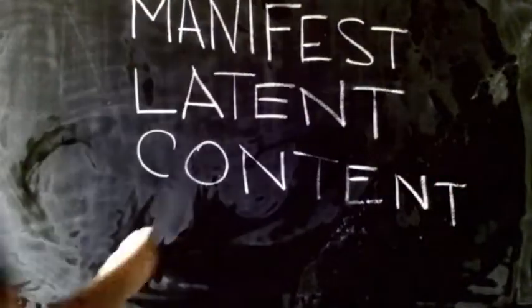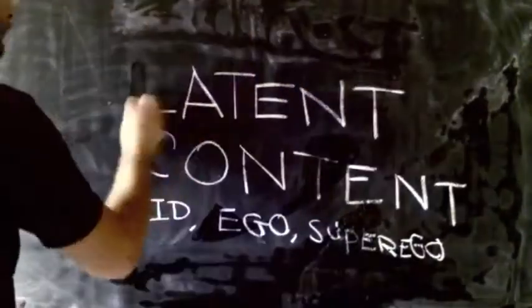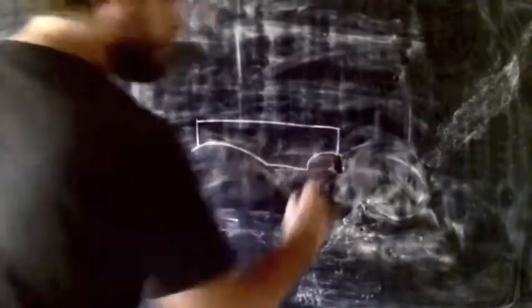Manifest content refers to the little images and experiences we have and see in a dream. Latent content refers to hidden meanings, drives, and desires embedded in those images and experiences. The surrealists, too, wanted to tap into the subconscious as a repository of subject matter for their art and as a new way of seeing into the human side of art.